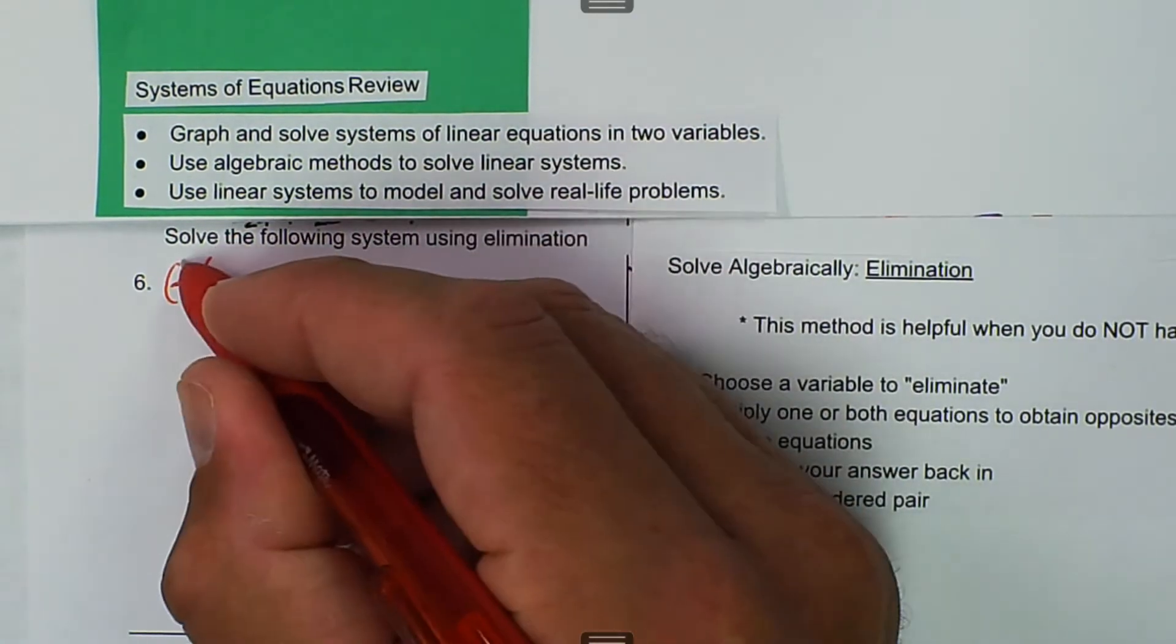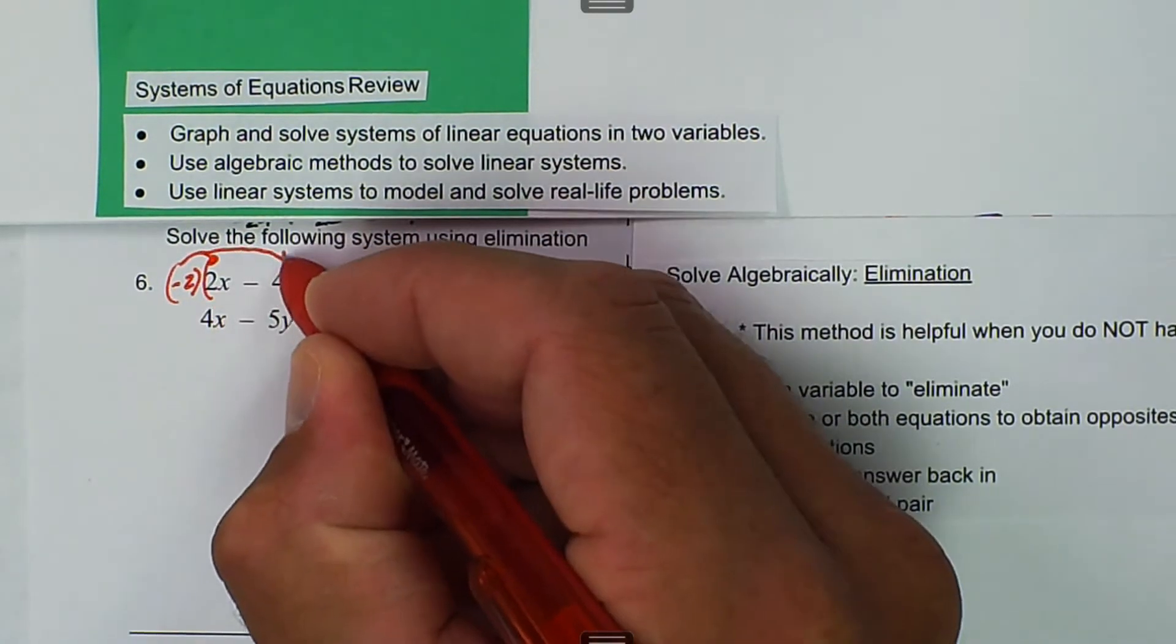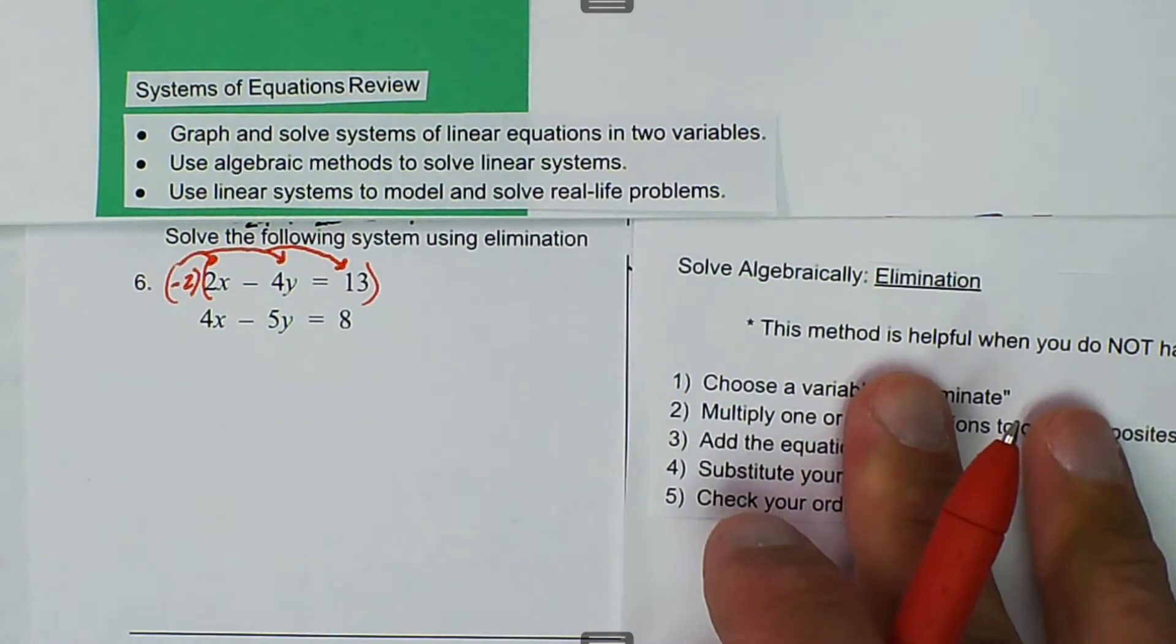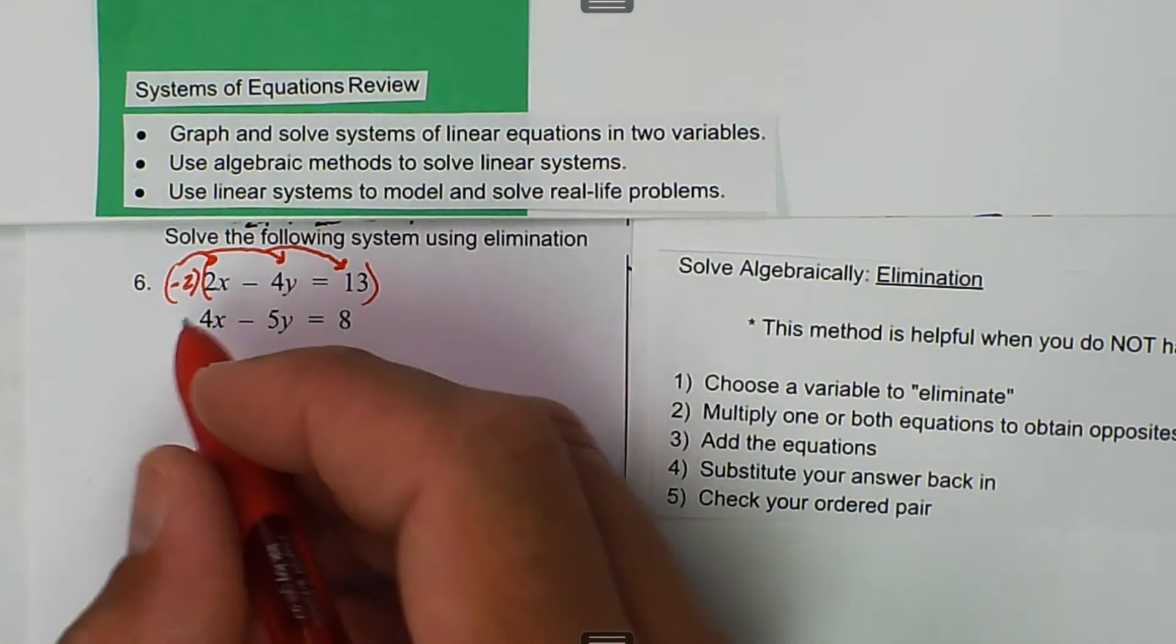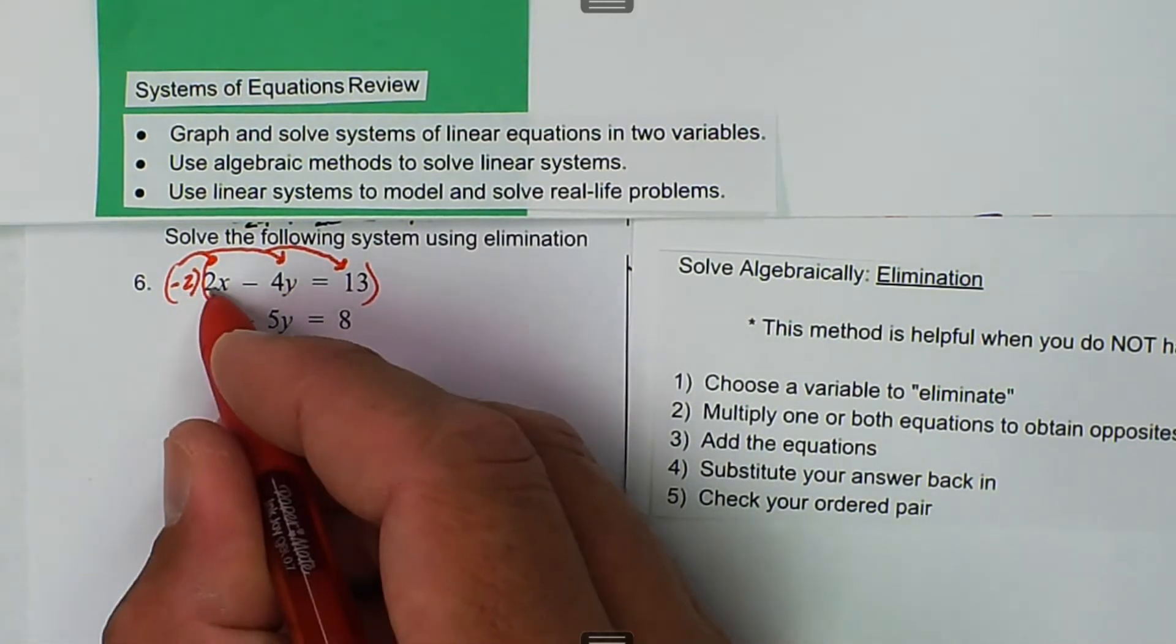So you multiply by negative 2 to all of the parts of the equation. And then in this case, we come down here. We've got negative 2.